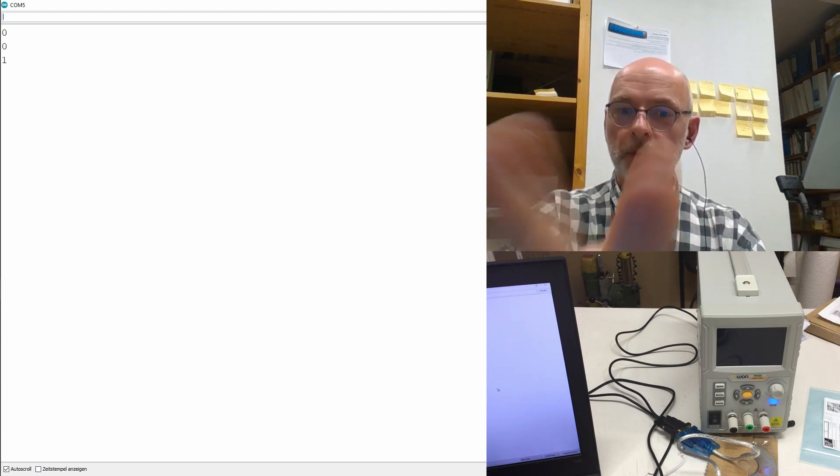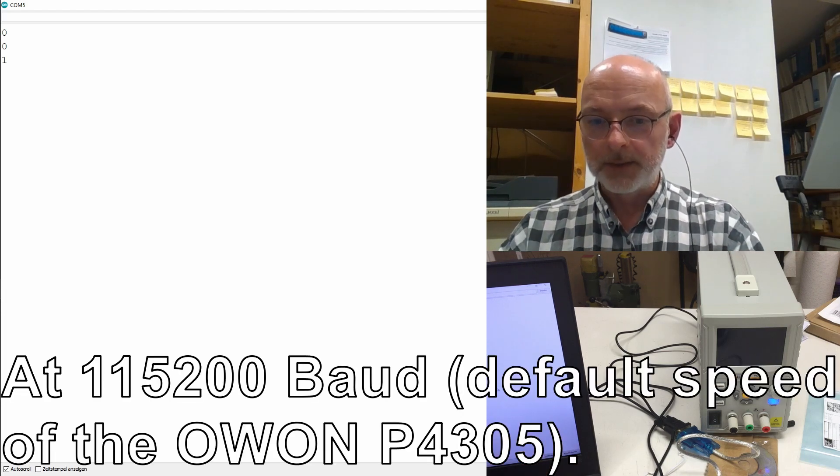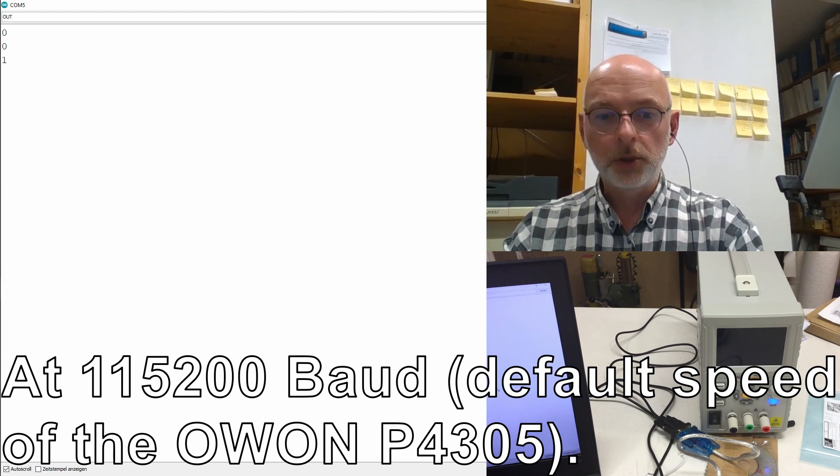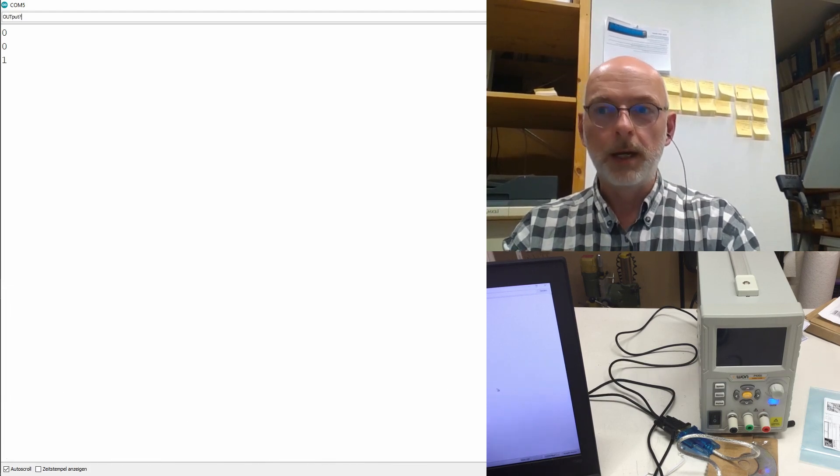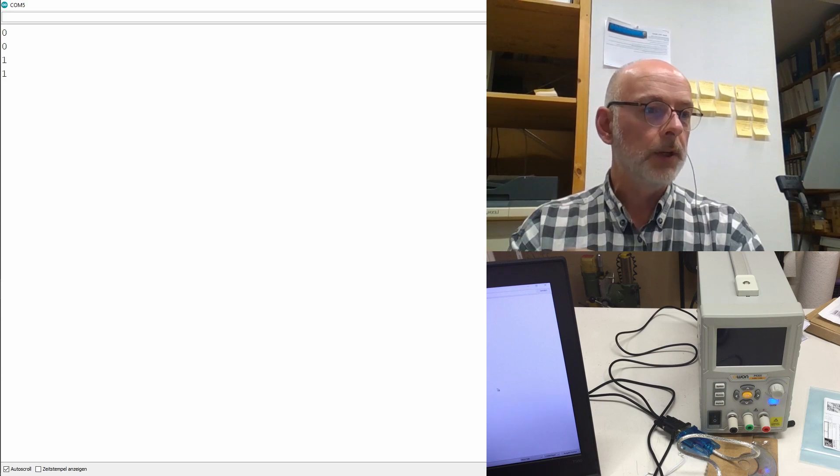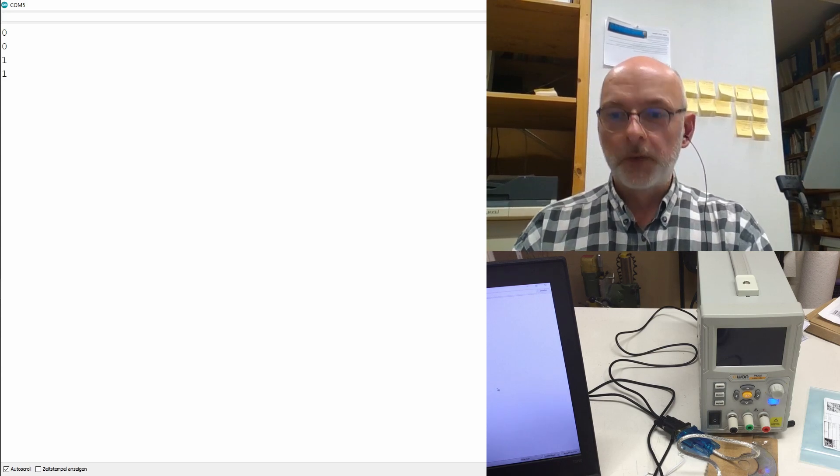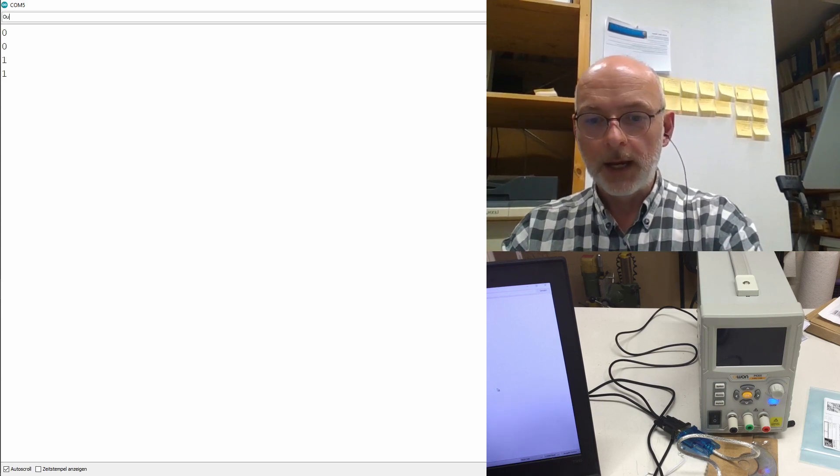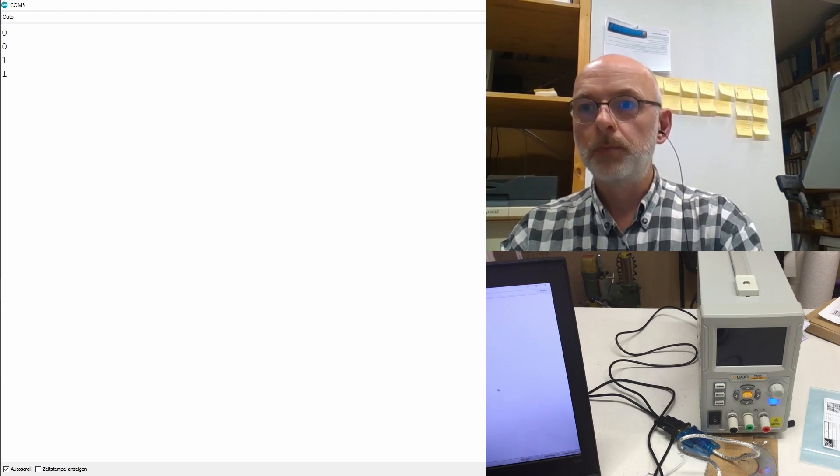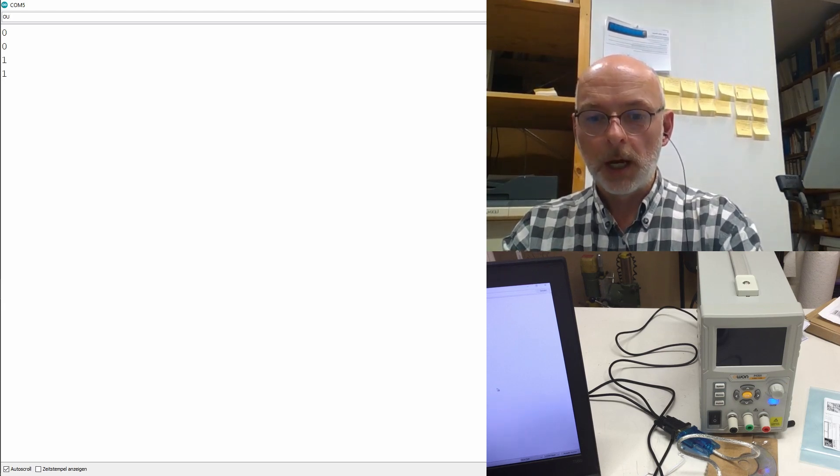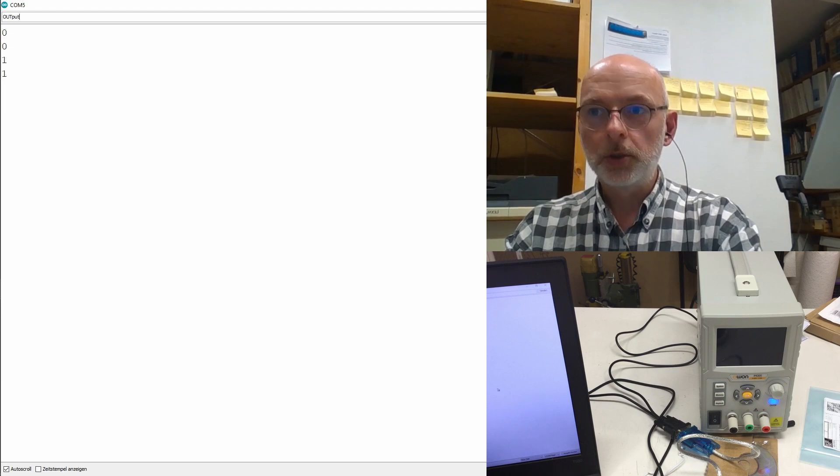Commands like 'output?' and it says 'output 1, output is on.' And I can say 'output 0' and it switches the output off.